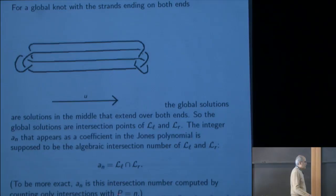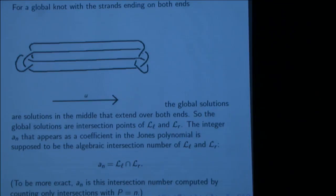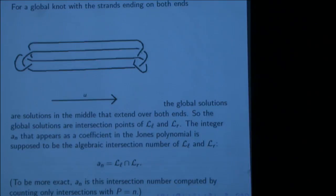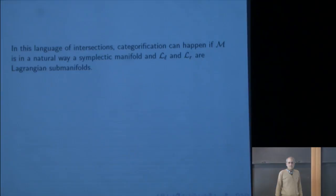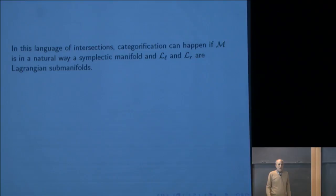The theory works fine for links as well as knots. In the language of intersections, categorification can happen in a situation that anyone who has worked on Floer theory will be familiar with. M, the moduli space of solutions for long strands, should be a symplectic manifold, and the L's should be Lagrangian submanifolds. The counting of intersection points has a categorification that's known as Floer cohomology, the A-model, or the Fukaya category of M, giving a framework for categorification.